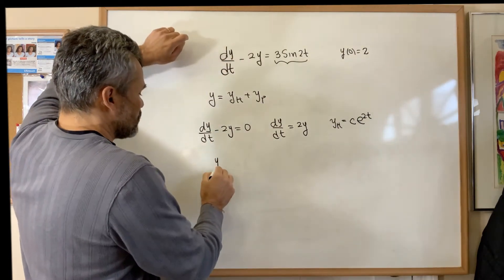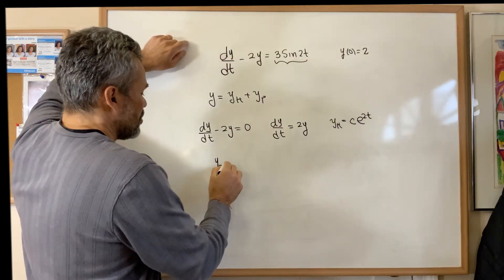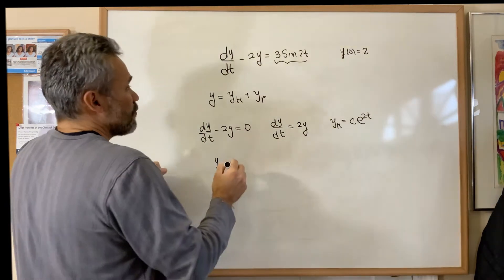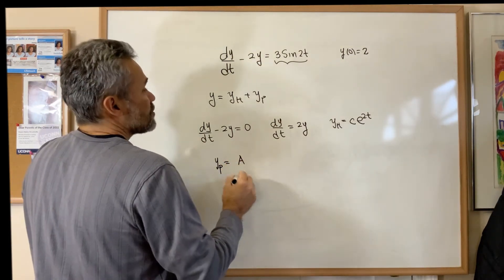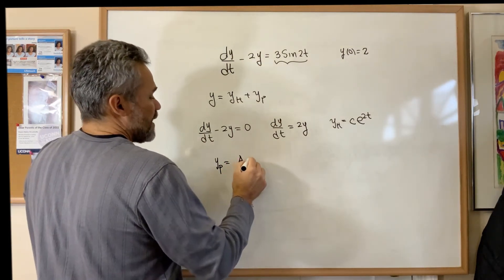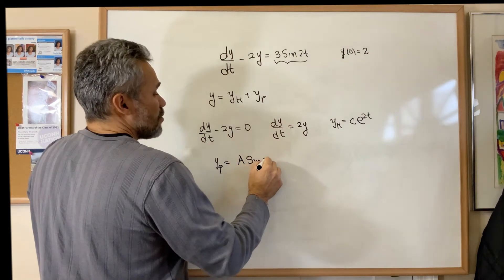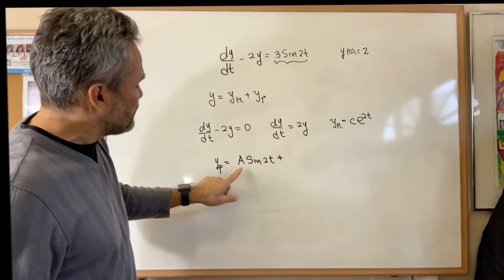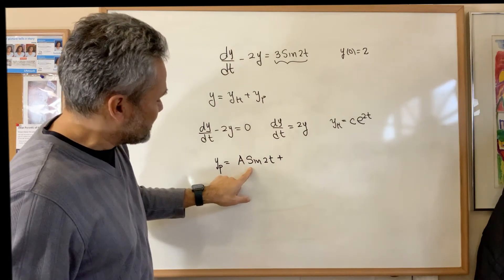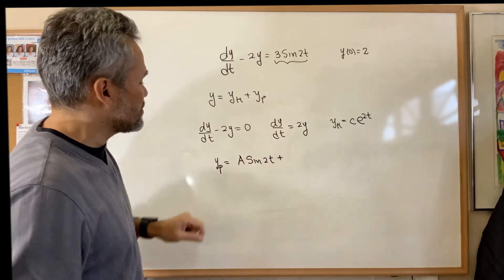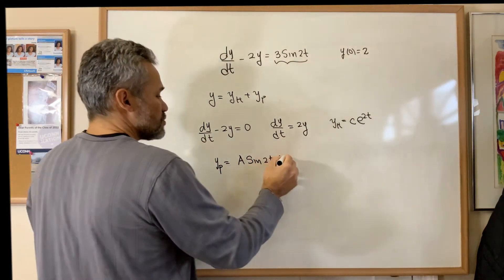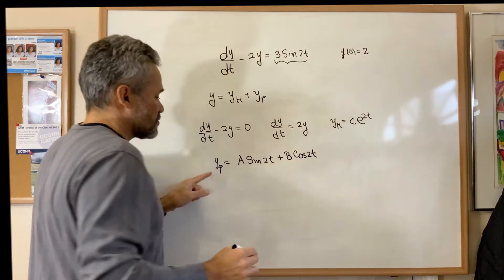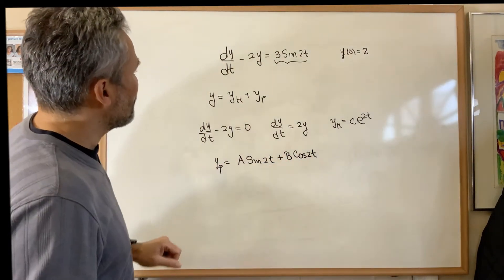To find the particular solution, we look at the non-homogeneous part and then we look for something similar. We look for something of the form a sine of 2t, but anytime we invite sine of 2t, we need to invite also cosine of 2t. Then the particular solution is of this form.